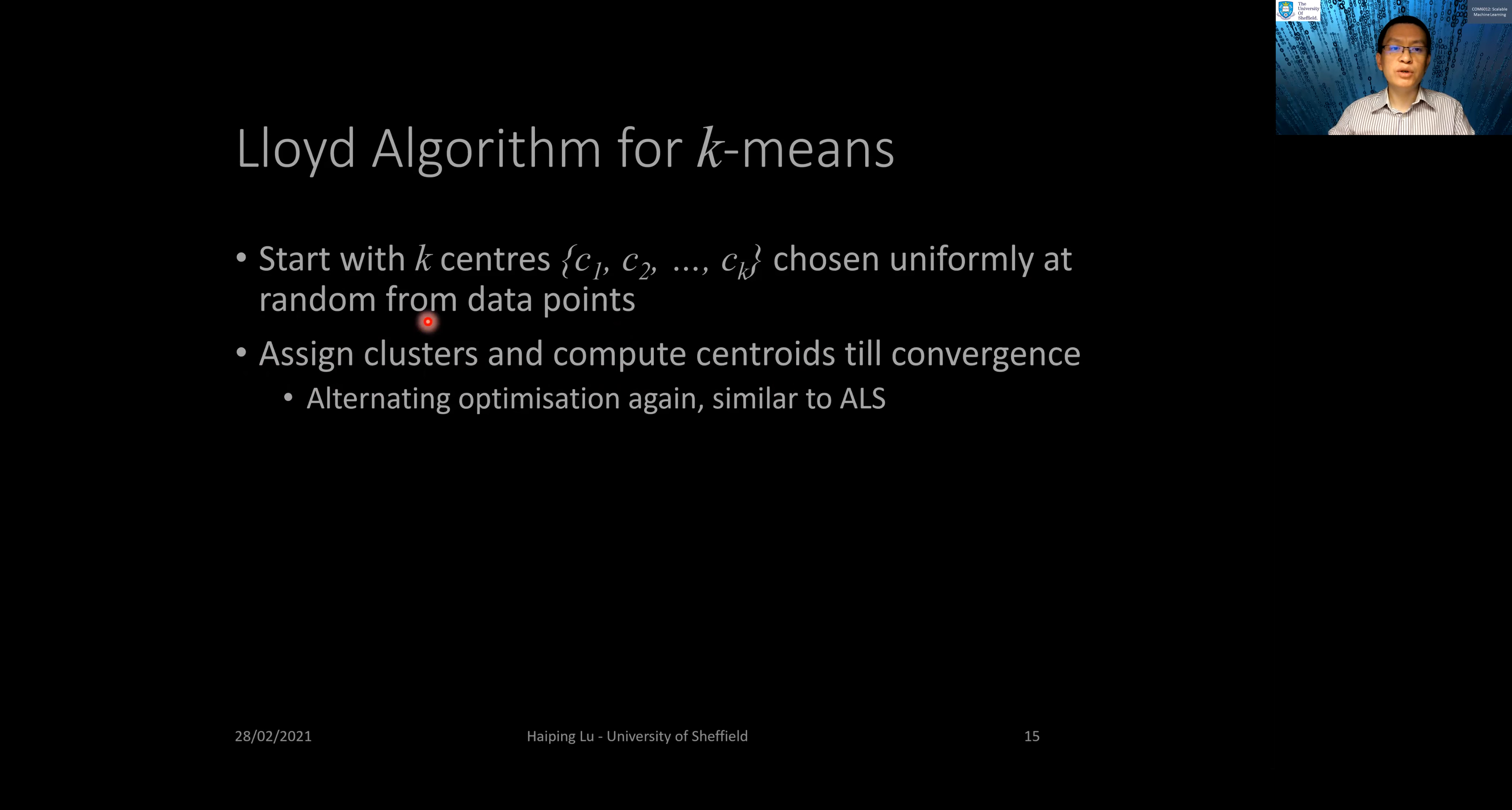We take turns doing reassignment and recomputation until convergence, meaning until the centroids do not move. This is an alternating optimization strategy similar to the alternating least squares we learned last week in collaborative filtering.